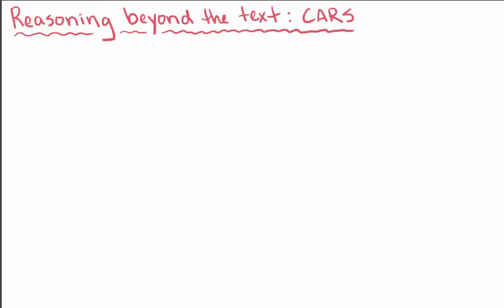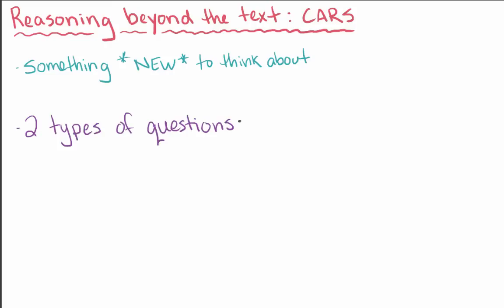These questions should be the easiest to spot because you'll be given something new to think about as part of the question, like a new situation, or a new piece of information, or new examples. There are two main types of reasoning beyond the text questions.